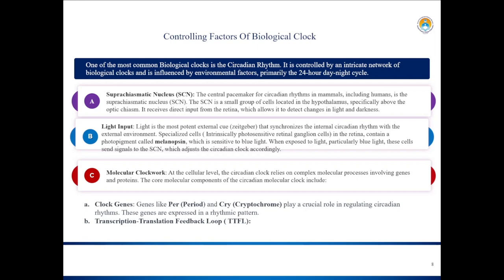Light is a potent environmental cue that maintains the body's internal cycle, bringing its effects through the suprachiasmatic nucleus. Light entrainment, or photoentrainment, occurs through specialized cells in the retina called intrinsically photosensitive retinal ganglionic cells. These cells are sensitive to light but not involved in conscious vision. They detect changes in light level especially in the morning and evening and send signals to the suprachiasmatic nucleus. Morning light helps reset the body's clock, which is why exposure to natural light upon waking is recommended.